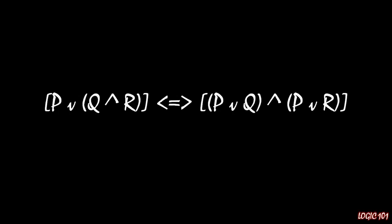This version of distribution is actually useful starting on the left side and converting it to the right side. This is, again, because of where the conjunction lies. On the right side, we know that both P or Q must be true as well as P or R must be true.